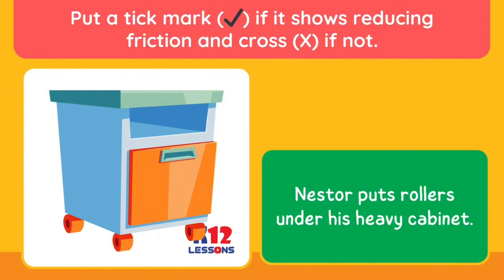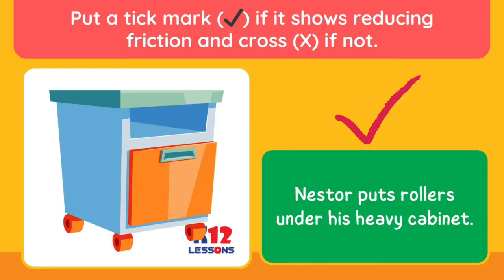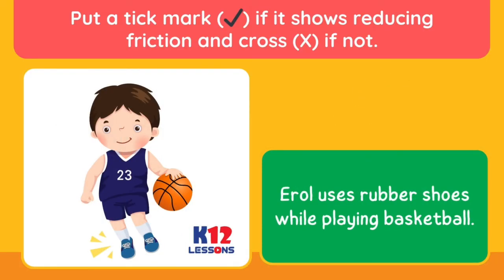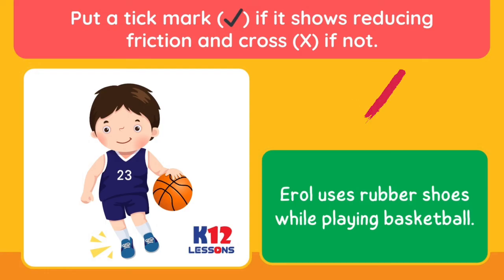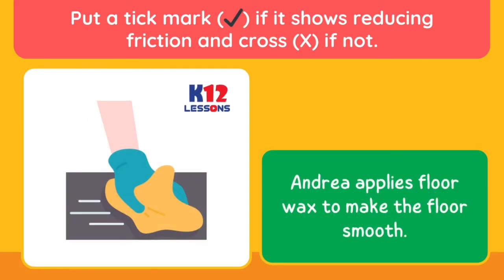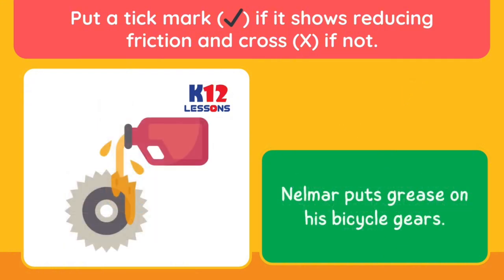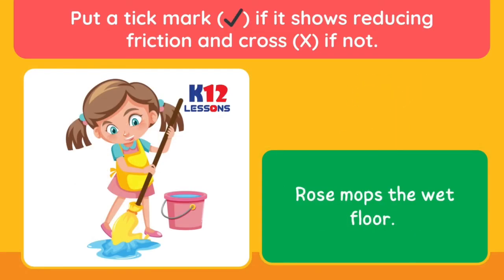Put a tick mark if it shows reducing friction and a cross if not. Nestor puts rollers under his heavy cabinet. Errol uses rubber shoes while playing basketball. Andrea applies floor wax to make the floor smooth. Nelmar puts grease on his bicycle gears. Rose mops the wet floor.